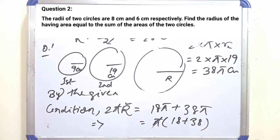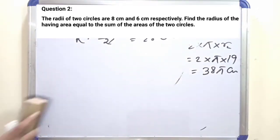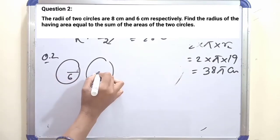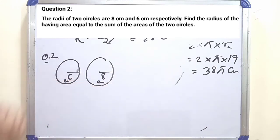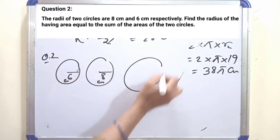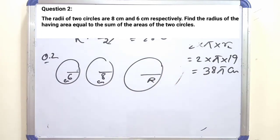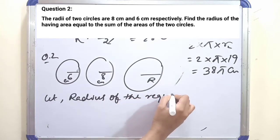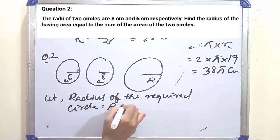This question is similar to question 1, but here instead of circumference, the new circle's area equals the sum of the areas of the two given circles. The given circles have radii 6 cm and 8 cm. Let the radius of the required circle be r centimeters.